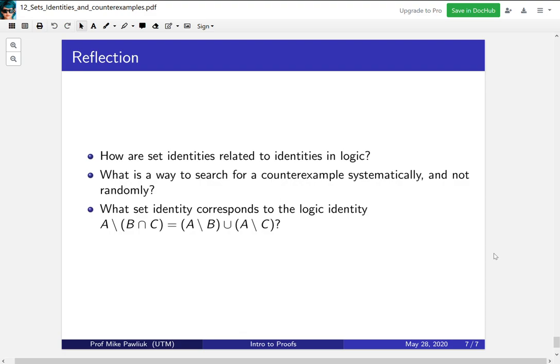Let's take a moment to reflect. How are set identities related to identities in logic? What is a way to search for a counterexample systematically and not randomly? What set identity corresponds to this logic identity? Thank you very much and have a good day.